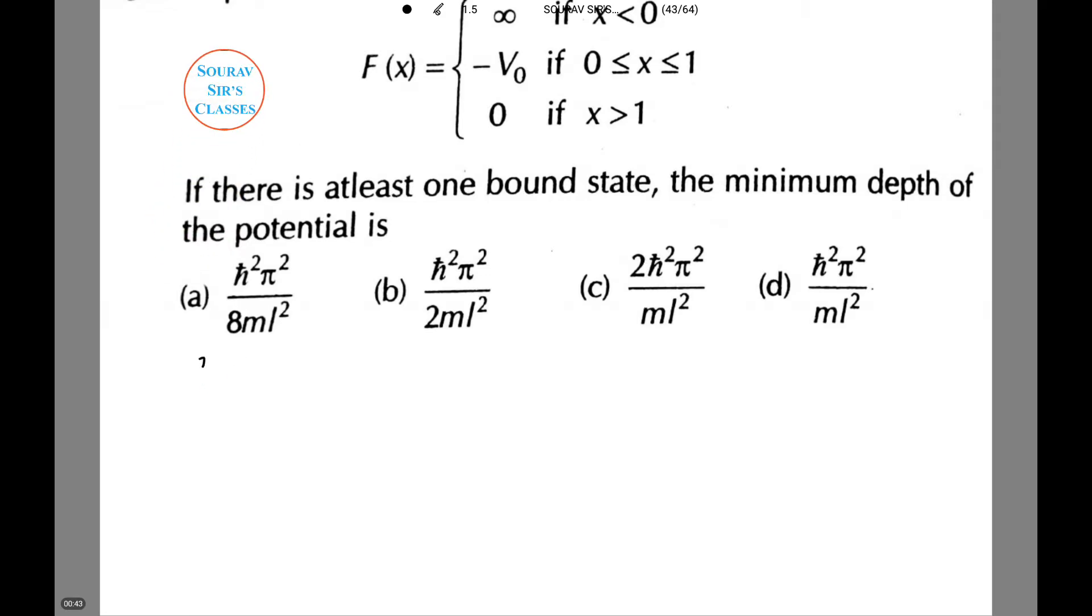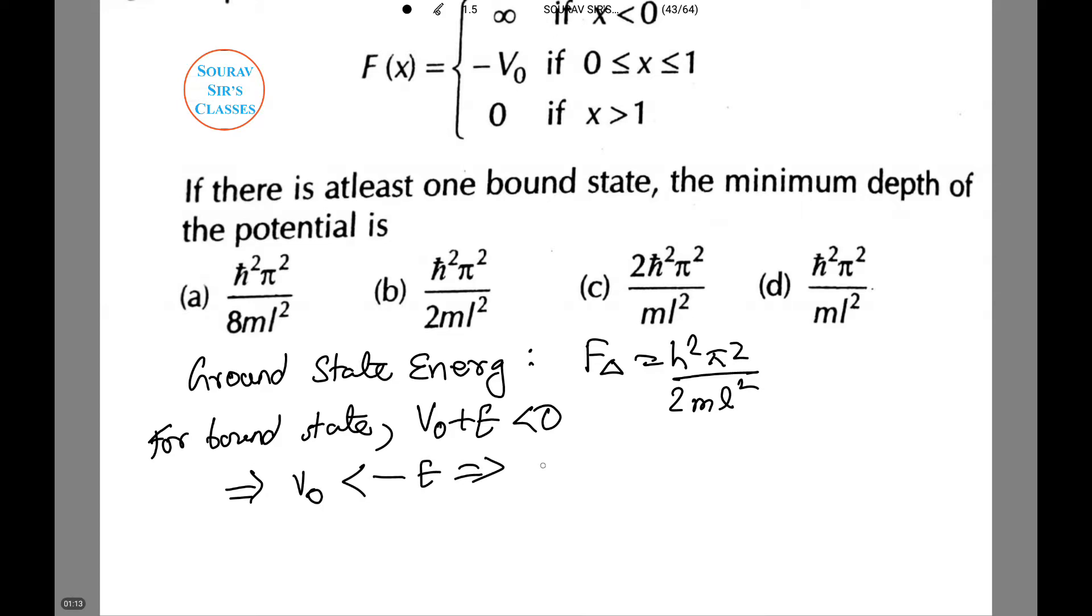First we calculate the ground state energy which has the formula E delta equals h square pi square by 2 ml square. For bound state v0 plus E less than 0, or v0 is less than minus E, or minus v0 is greater than E which equals h square pi square by 2 ml square. Hence, minus v0 must be h square pi square by 2 ml square which is option number d.